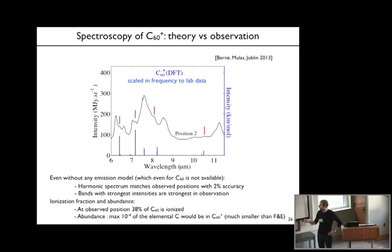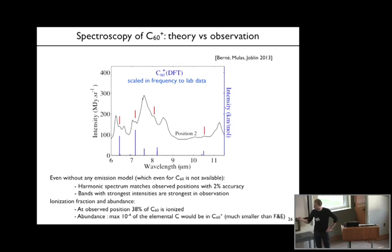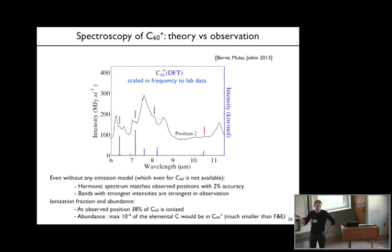We don't yet have an emission model for C60, and it's very difficult to have one; for C60+ it will be even more difficult. But the harmonic spectrum matches the observed positions with 2% accuracy, which is quite good. The bands with the strongest intensities predicted by theory are actually the four bands we observe—what's predicted to be strong is what we see. That's quite reassuring.